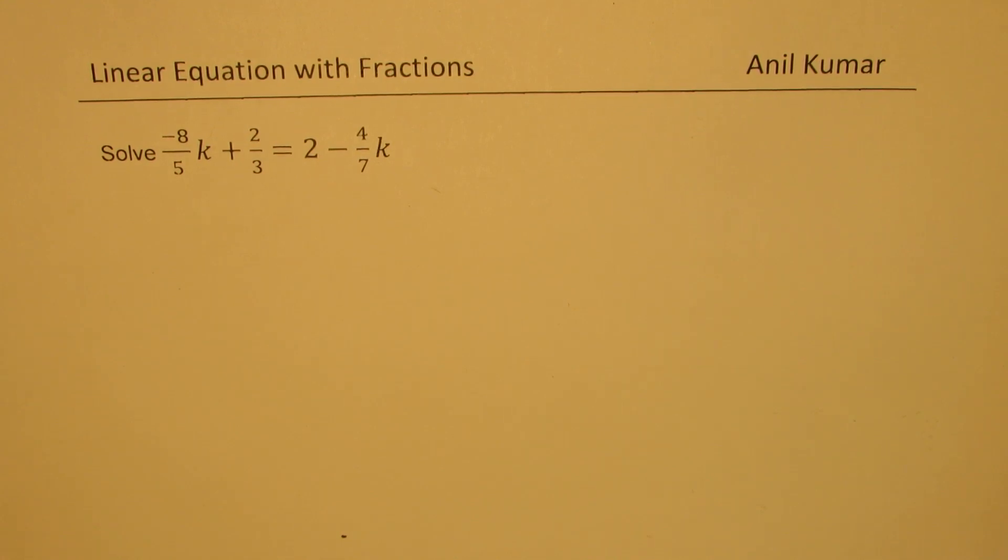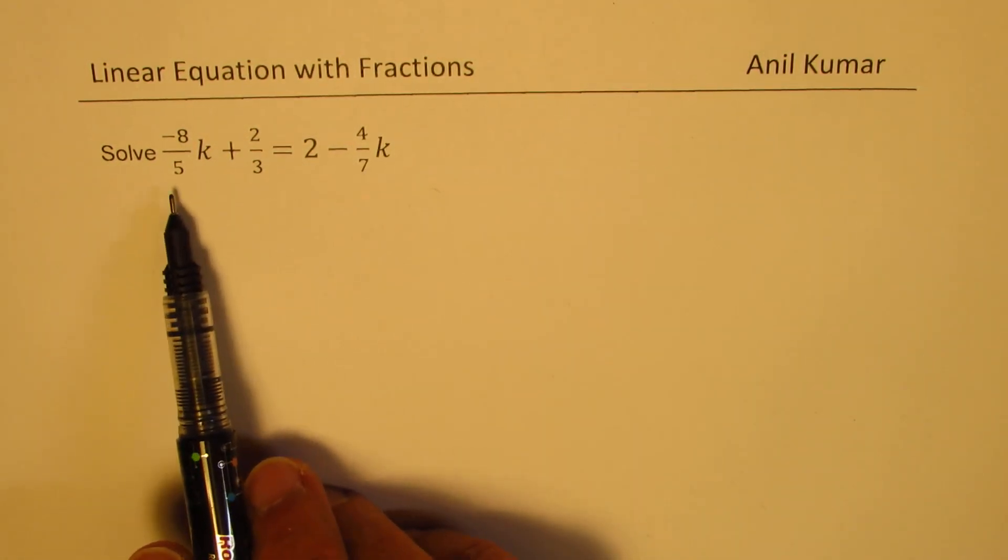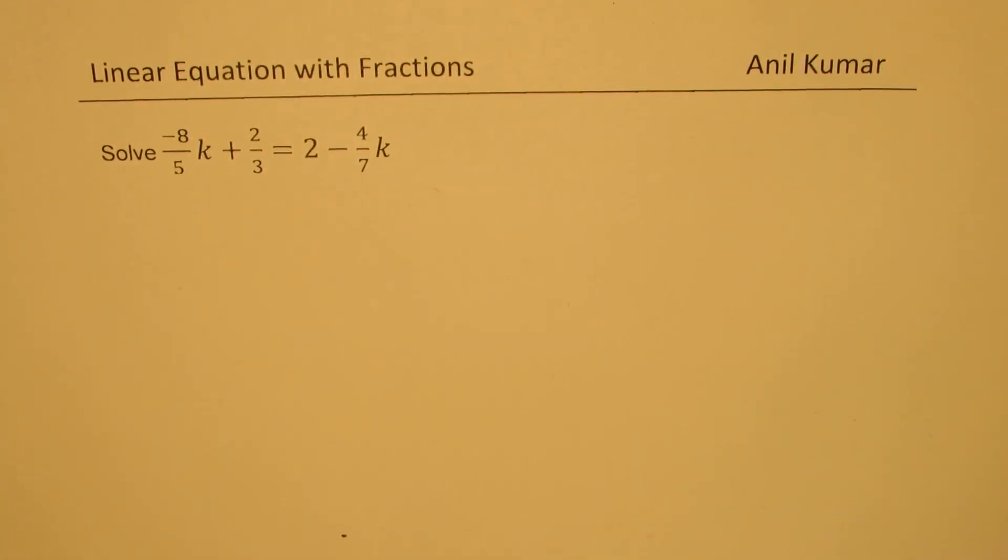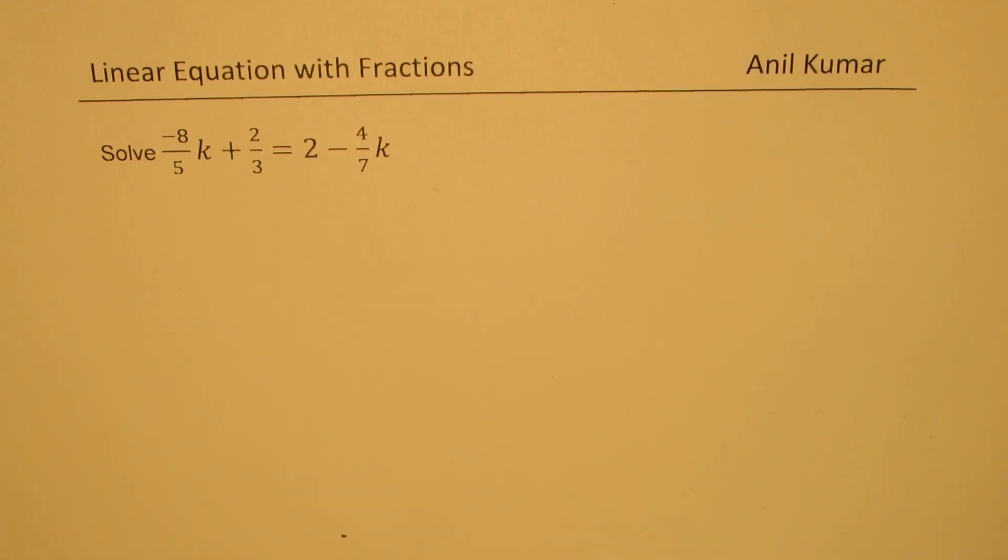Now here is a linear equation where we have fractions and these fractions have denominators which are prime numbers, that means there is nothing common between those. We also have to add fractions with whole numbers so that makes it even more complicated. Let us see how to solve it.